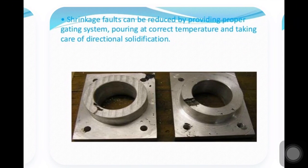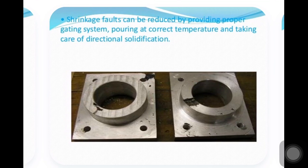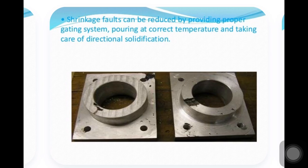A shrinkage fault can be reduced by providing a proper gating system, pouring at a correct temperature, and taking care of the directional solidification. Using a proper gating system, pouring at the correct temperature, and ensuring proper directional solidification can remove these difficulties.